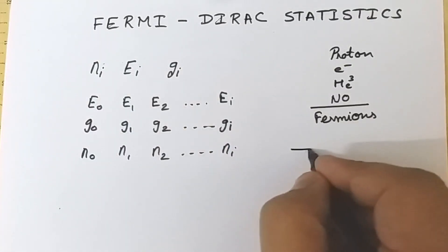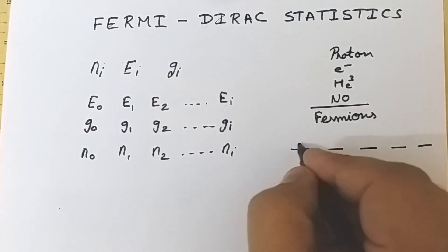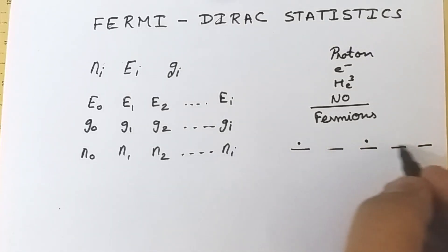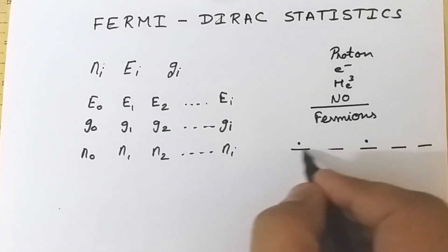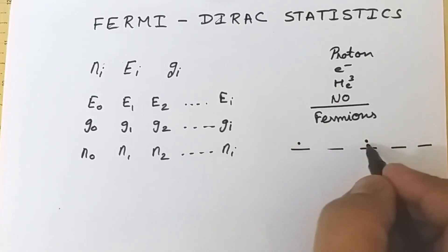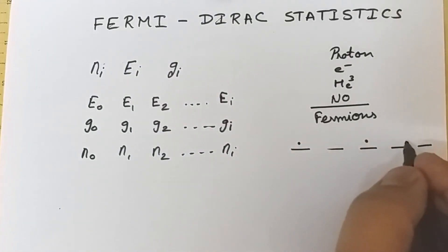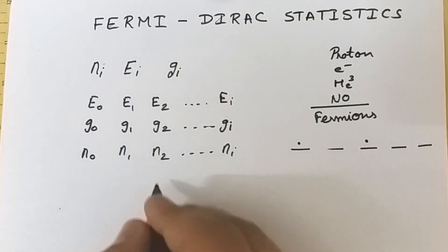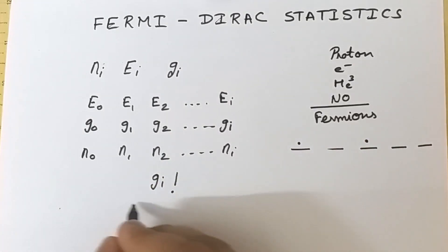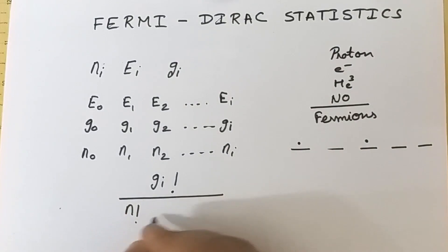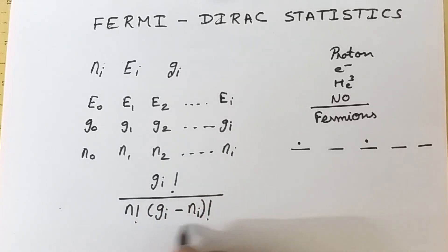Only one particle will occupy a single energy state. For example, if we have four or five states and two particles, those two particles occupy individual states — they cannot share a single state. According to Pauli's principle, only one particle per state. The number of ways to arrange this is given by Gi factorial divided by Ni factorial, times Gi minus Ni factorial.